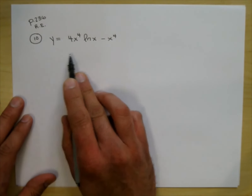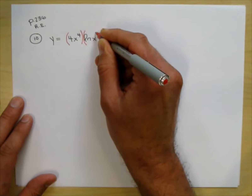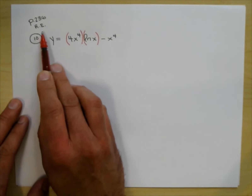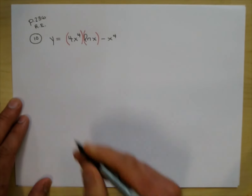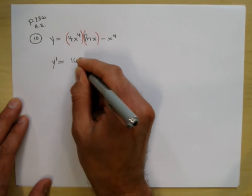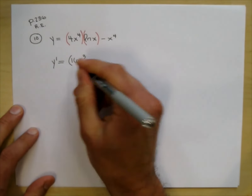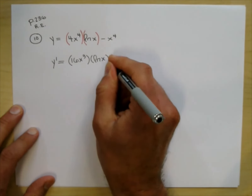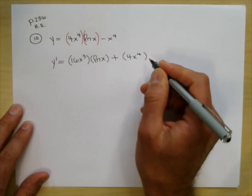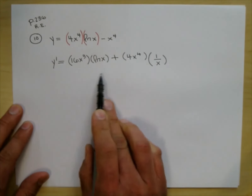Take the derivative. When I take the derivative of this, I see the first term is a product. This comes from page 236, Review Exercises. So this is a product rule. The product rule says the derivative of the first, which is 16x³, times the second, which is lnx, plus the first 4x⁴ times the derivative of the second. The derivative of lnx is 1 over x. So that takes care of the product rule.